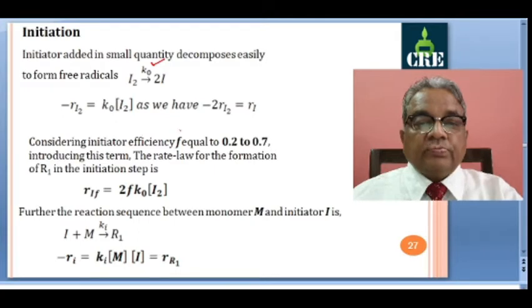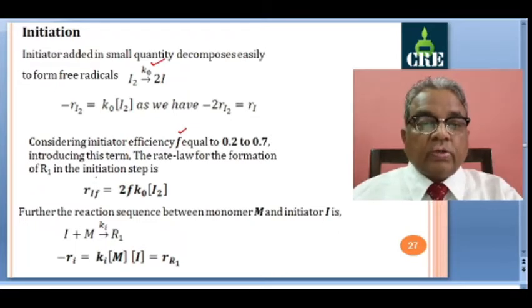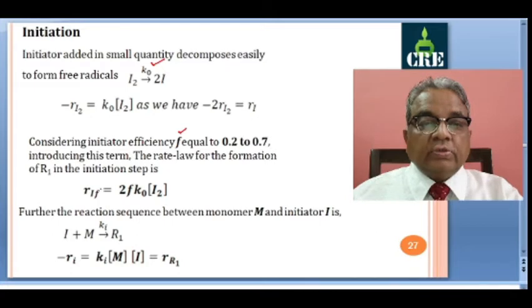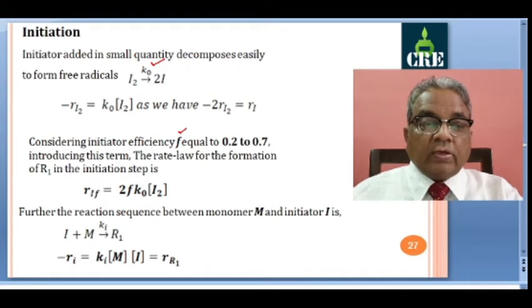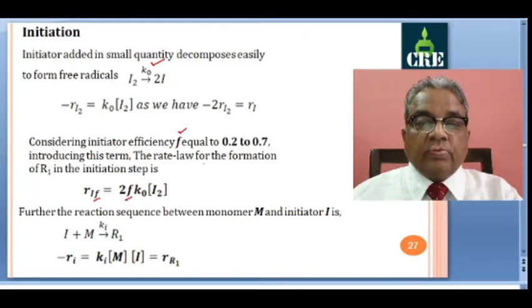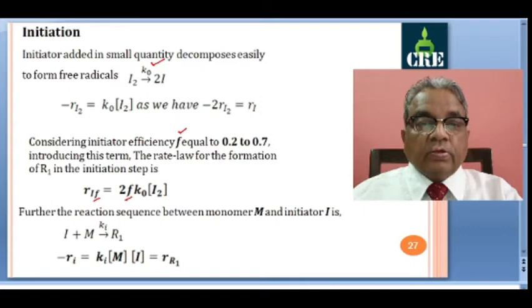The initiator will not give 100% efficiency; efficiency ranges from 0.2 to 0.7. We have to consider this efficiency fraction when calculating the rate of formation of free radicals. The rate R_I (with subscript F for formation) is multiplied by efficiency, which may be 20%, 30%, up to 70% maximum. This is based on experimental observations obtained using various initiators.